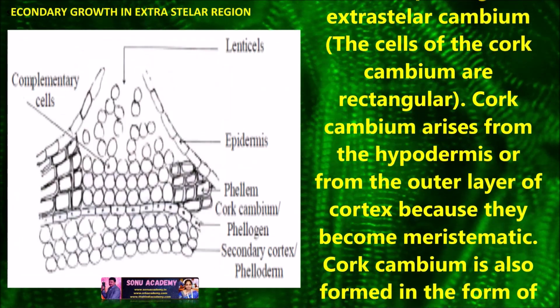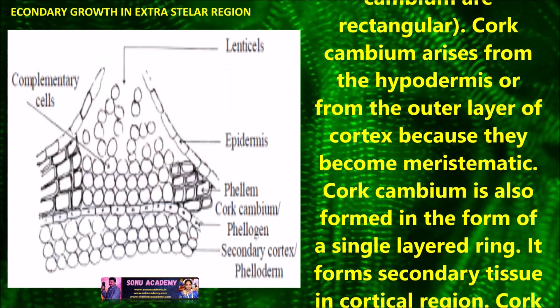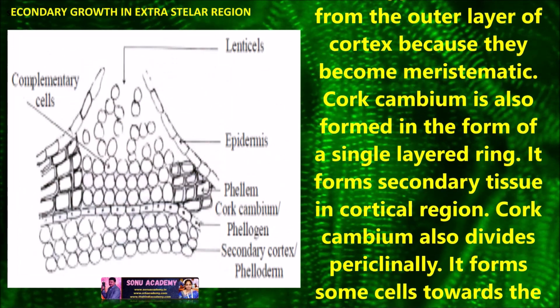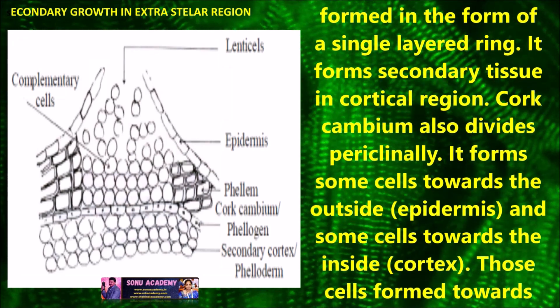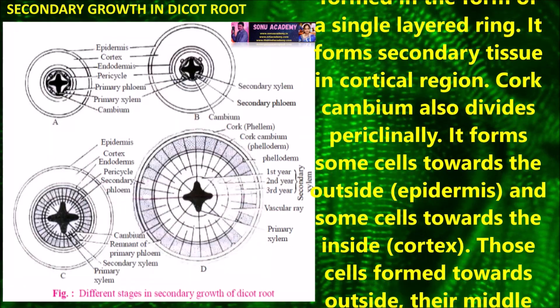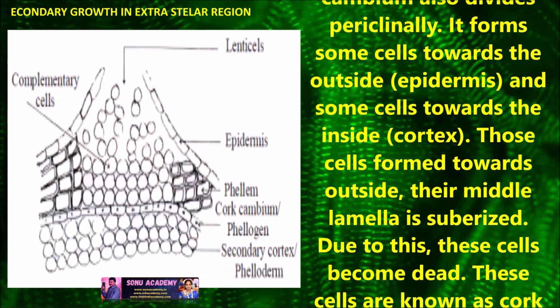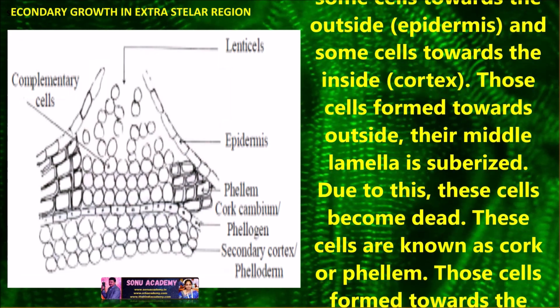Cork cambium is also formed in the form of a single layer. During its activity, it forms secondary tissue in the cortical region. The cork cambium also divides periclinally. It forms some cells towards the outside and some cells towards the inside of the cortex. The cells formed towards the outside have their middle lamella suberized. Due to this, these cells become dead.